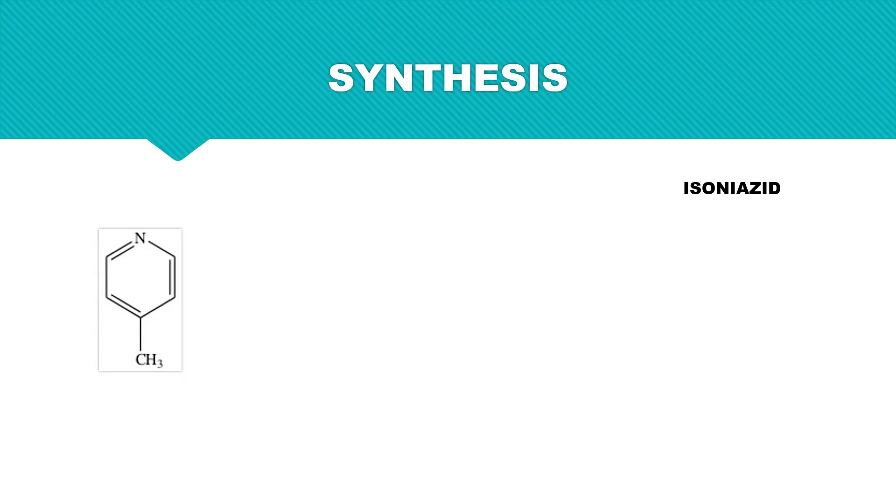The starting material is 4-picoline. This will get oxidized in the presence of potassium permanganate, KMnO4. The methyl group gets converted into a carboxylic group and a new molecule is formed known as isonicotinic acid.